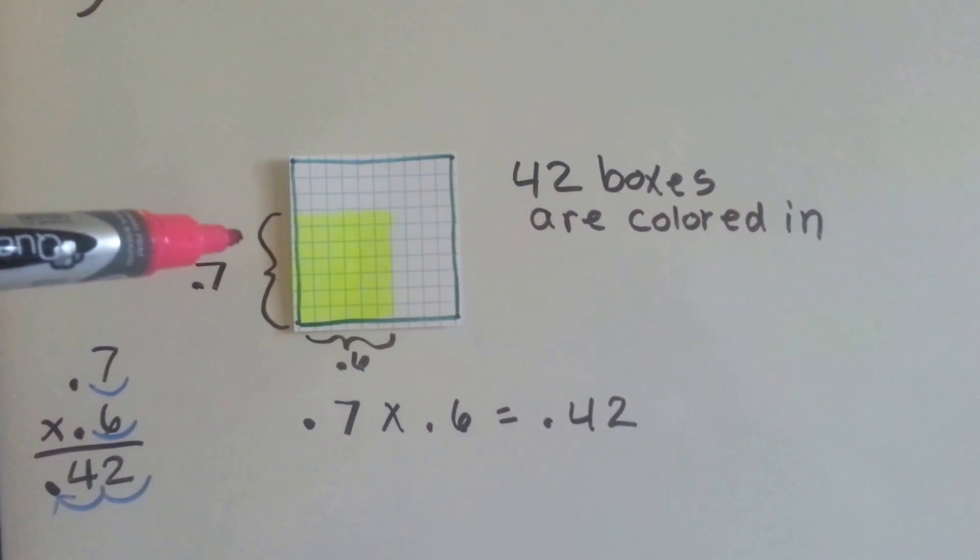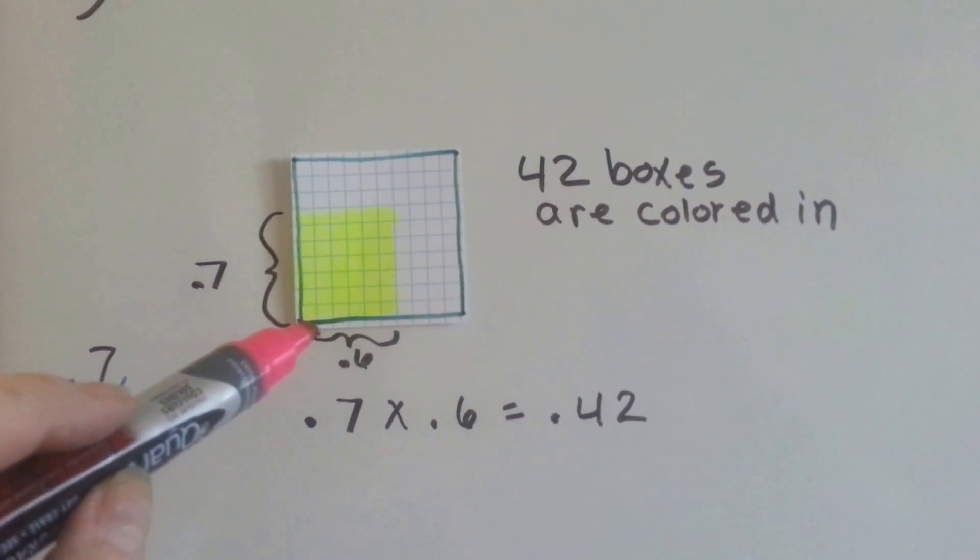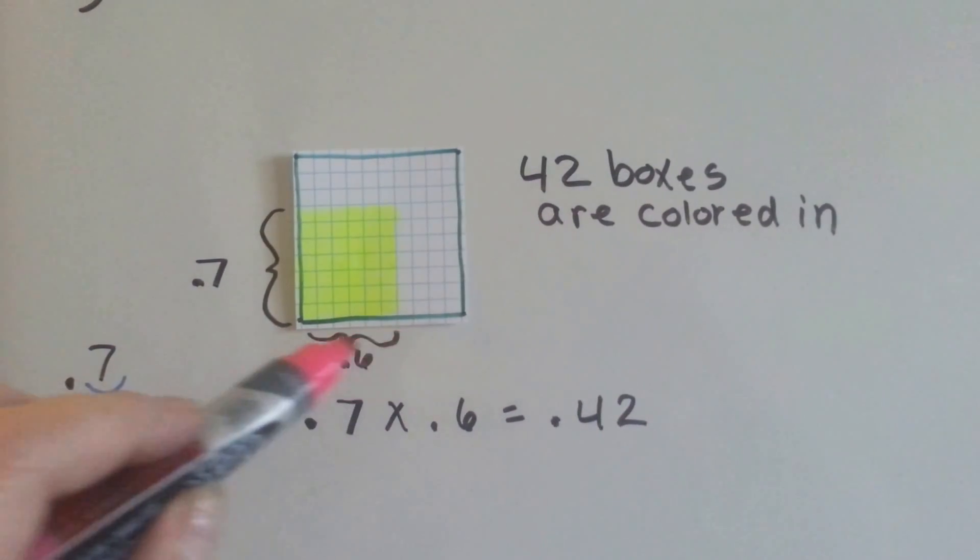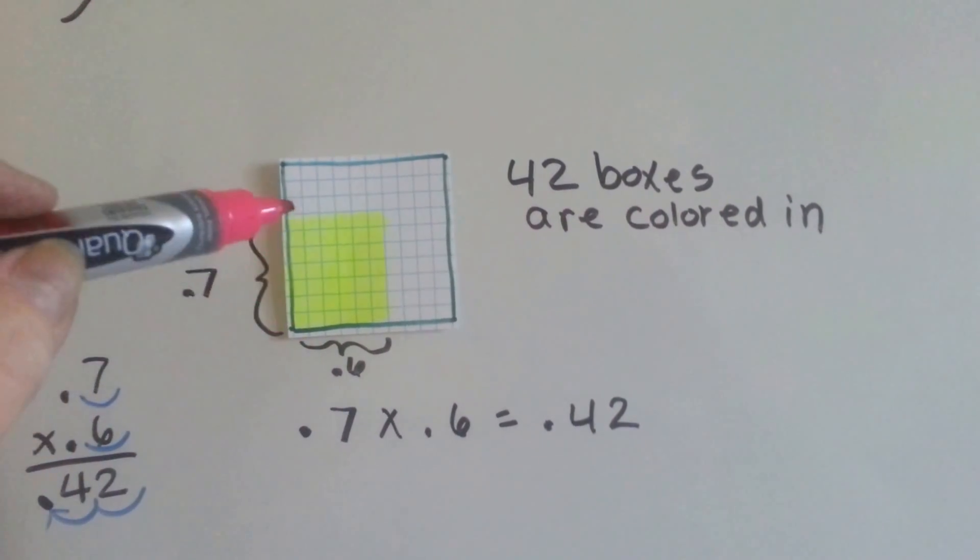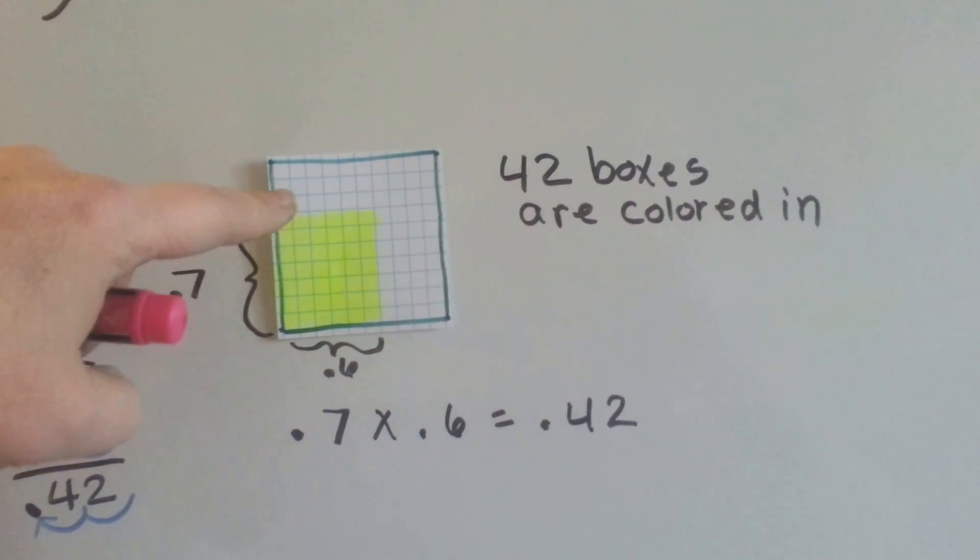What you do is you ask yourself, how many tenths are in 6 tenths? Well, there's 6 of them, so we count 6 across the bottom here. Then we fill up 7 tenths high, because each one of these is a tenth.